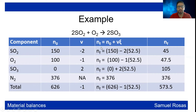The number of final moles equals initial moles plus the stoichiometric coefficient times the extent of reaction: 150 + (−2 × 52.5) = 45 for SO2; 100 + (−1 × 52.5) = 47.5 for O2; 0 + (2 × 52.5) = 105 for SO3; 376 for N2 (inputs equal outputs for the inert).